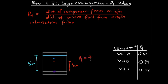The units aren't really significant here, as long as we use the same unit on the top and the bottom of the fraction. So as long as we measure both distances in centimetres, or both in metres or millimetres, we'll get the right answer. Here we've shown that the retardation factor for this red spot is 0.6.